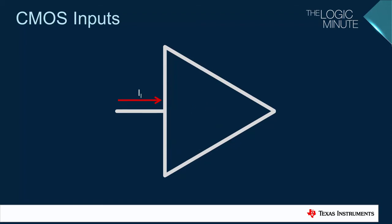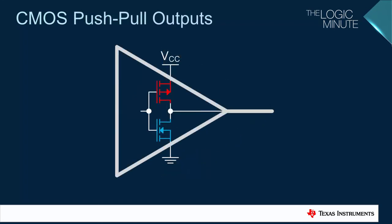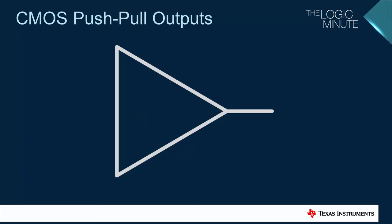CMOS inputs don't have an associated symbol because they are the standard type of CMOS input. This circuit represents a typical push-pull output stage for a CMOS logic device such as an FPGA, microcontroller, or logic gate. It can either drive an output up to VCC through the PFET shown in red, or down to ground through the NFET shown in blue. There isn't a symbol to identify a push-pull output, as it is assumed to be the standard output type for CMOS devices.